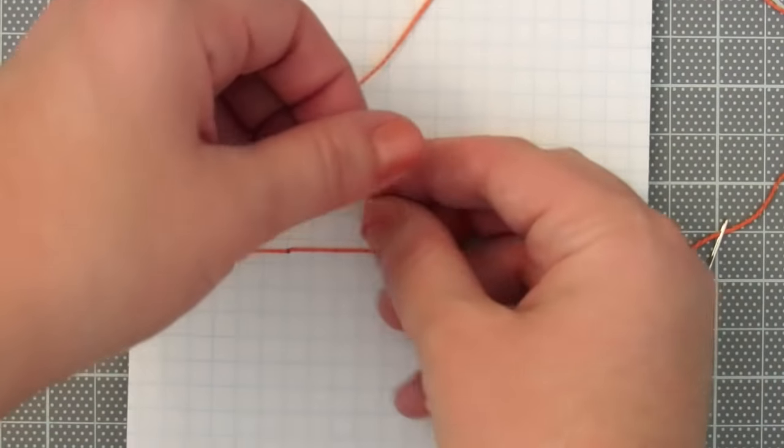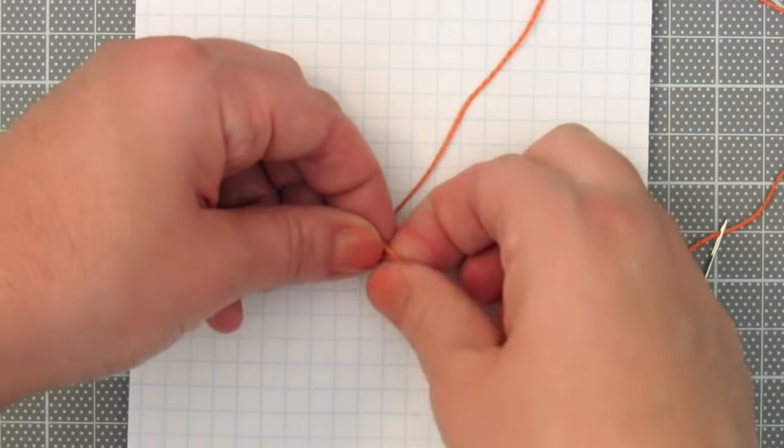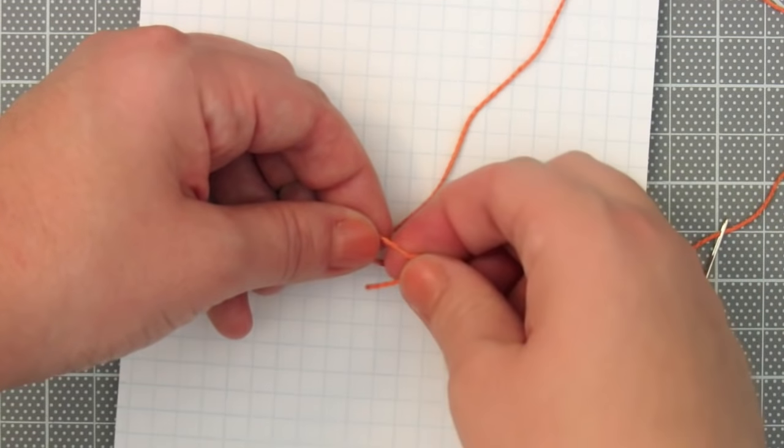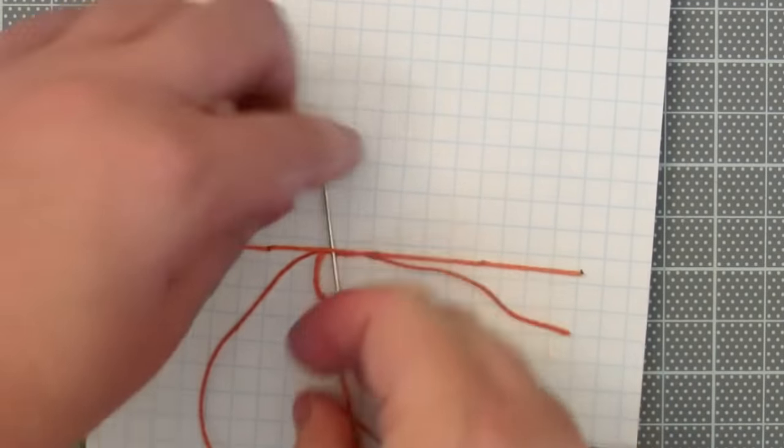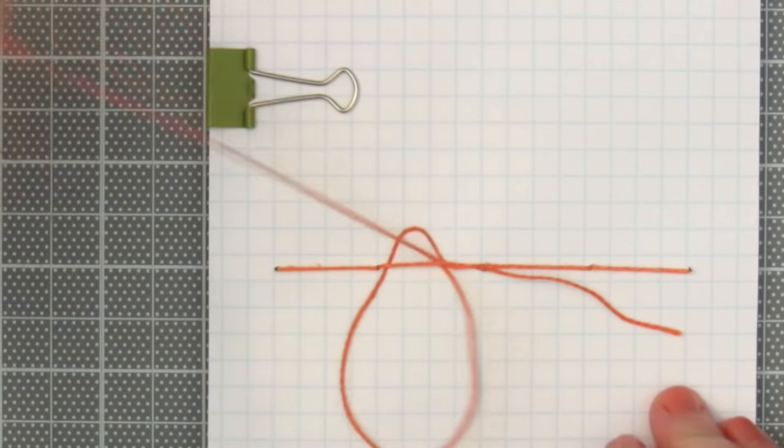Then tie one more time to complete the knot. You can tuck the ends under if you'd like and then cut the thread off.